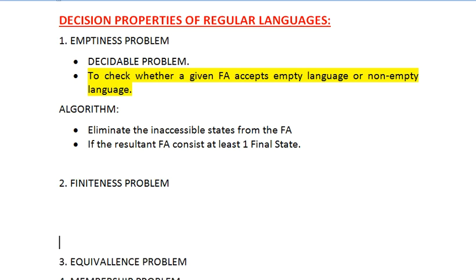Moving to the next property: the finiteness problem. Since we are talking about finite automata and regular languages, the concept of finiteness naturally comes up. The finiteness problem states that we need to check whether the language accepted by a given finite automaton is finite or not. If an algorithm exists for this, the finiteness problem is a decidable problem; otherwise it is not decidable.